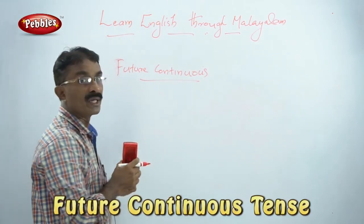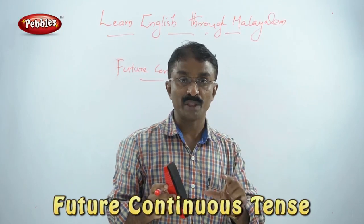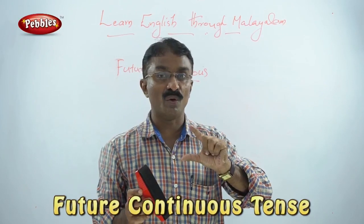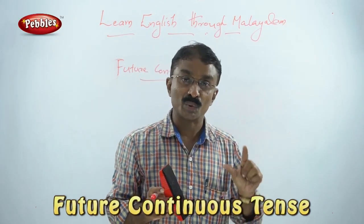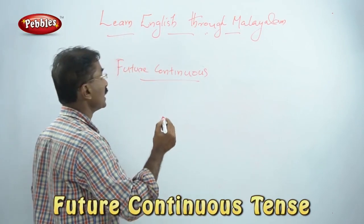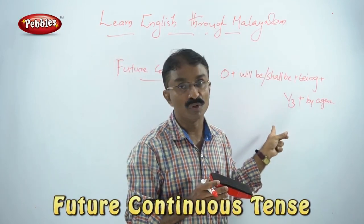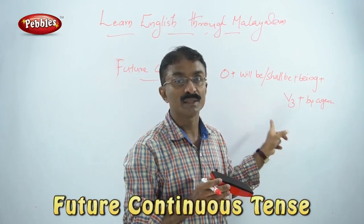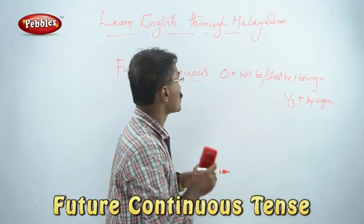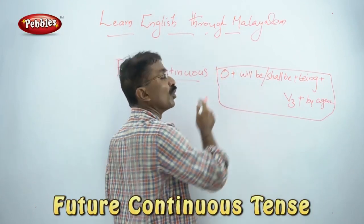The Future Continuous Tense passive is a tradition. The structure uses Object plus V3 form of the verb. That means we have all passive voices formed this way.